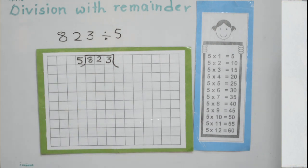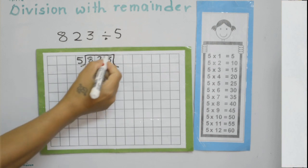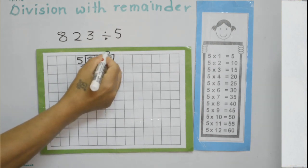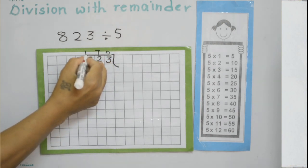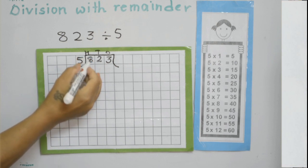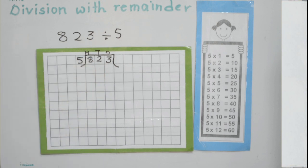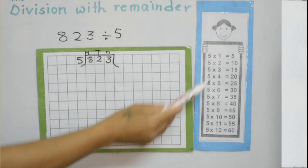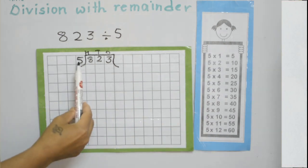When we divide, we always start from the higher place. Here, 1, 10, and 100 — 100 is the higher place, so we divide this first. The digit is 8. Now look at the five times table because we are going to divide by 5.